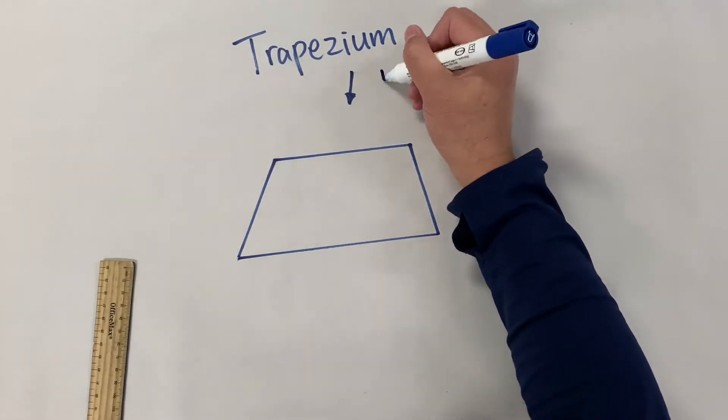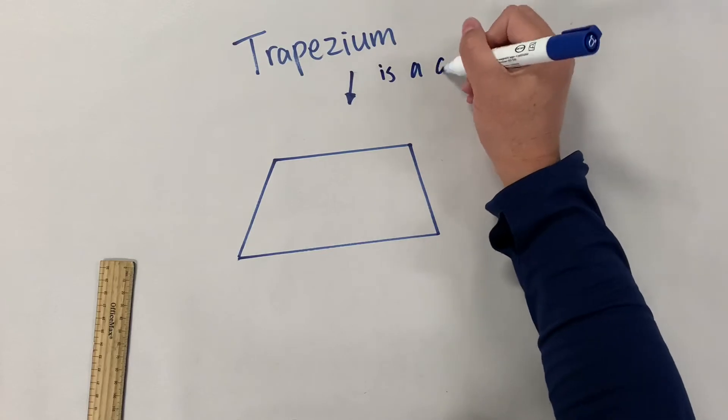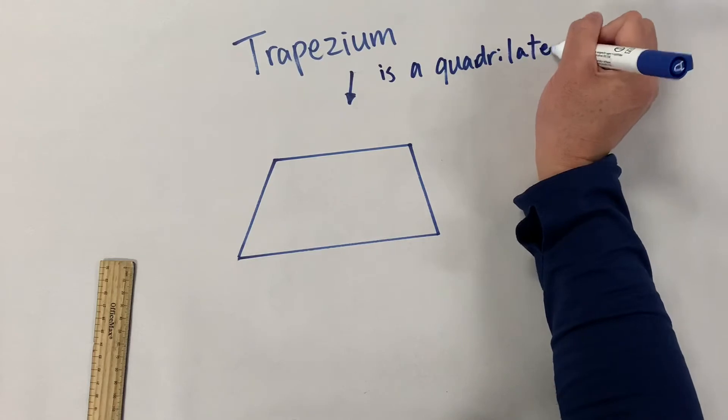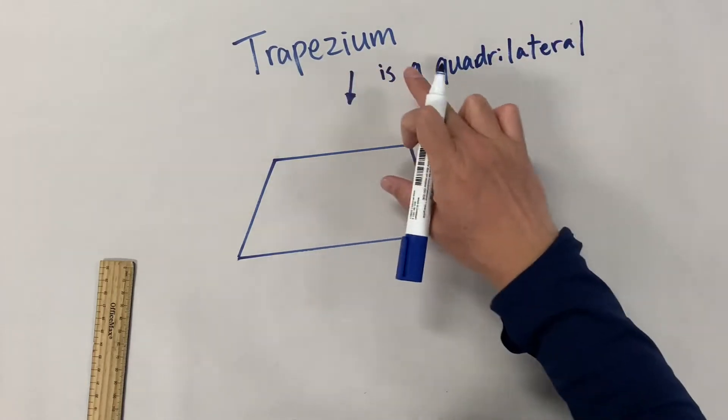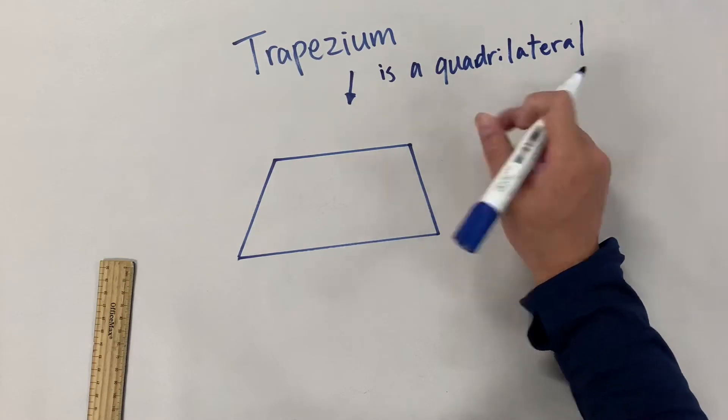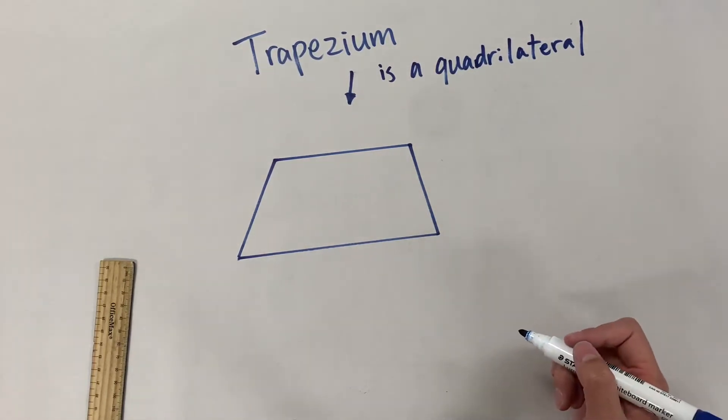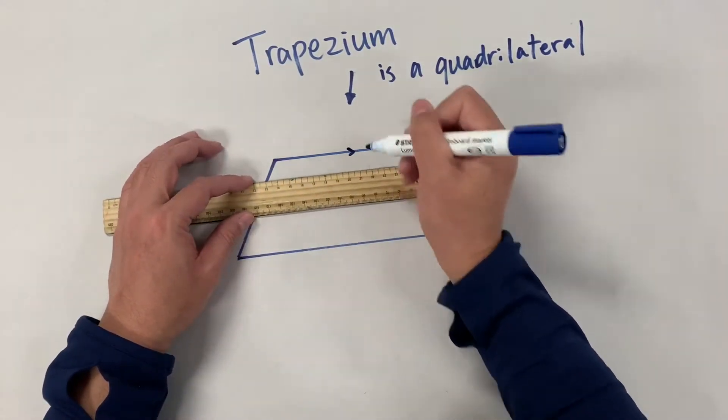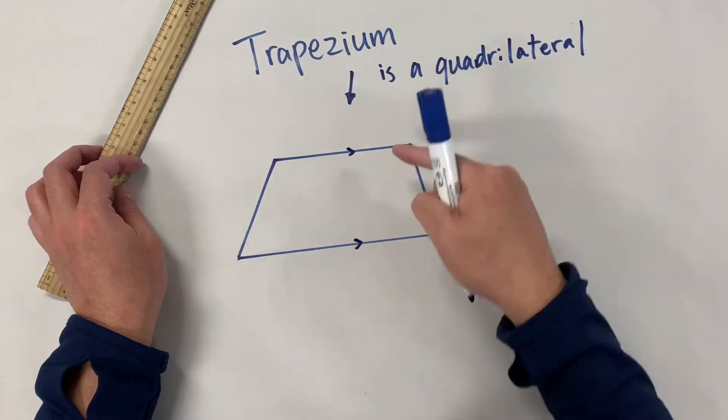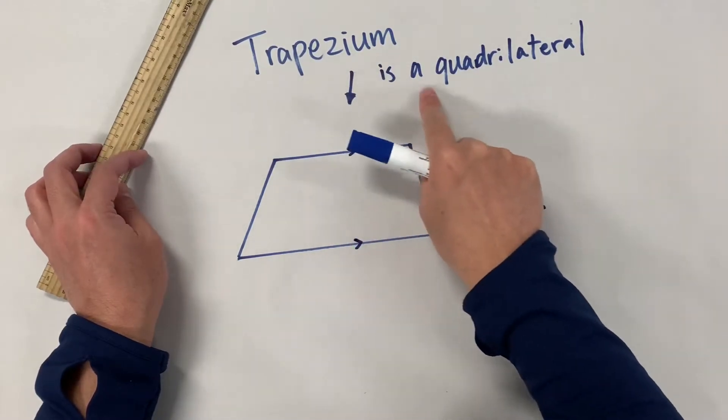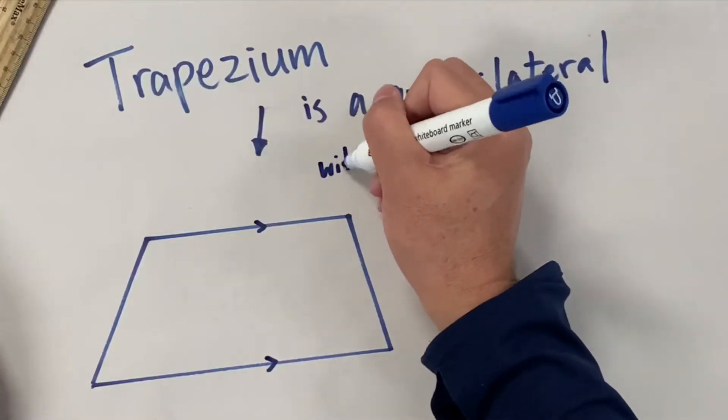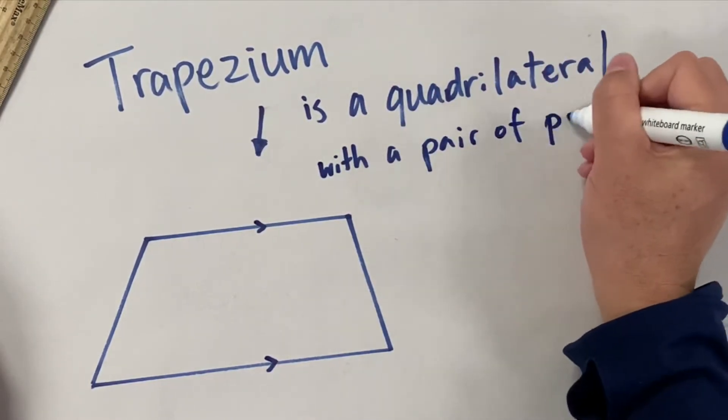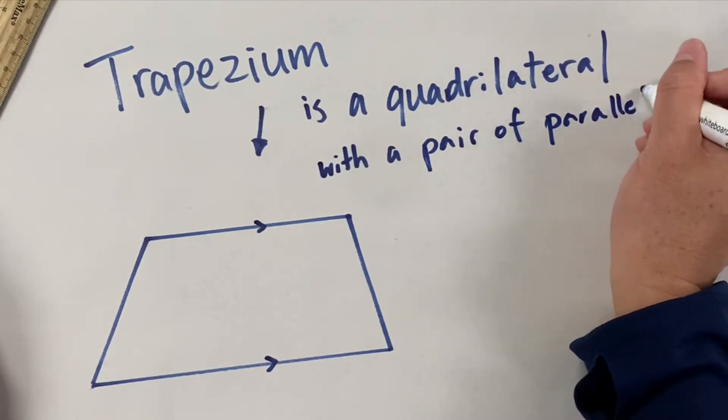So trapezium is a quadrilateral. That's a good start. Trapezium is a four-sided polygon with what? I'm sure some of you might know it. These two sides are parallel. So trapezium is a quadrilateral with a pair of parallel sides.